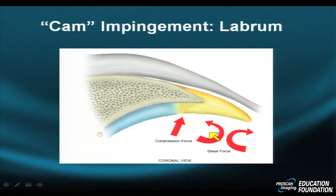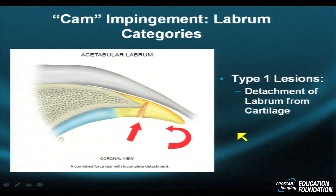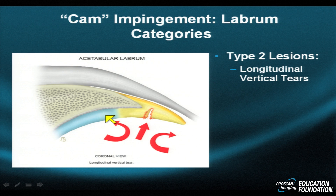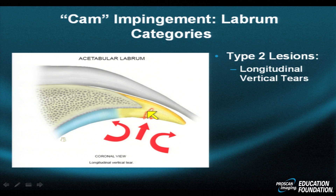Looking at the labrum, there are compressive forces and shear or rotatory forces. We can categorize labral injuries by location. In cam impingement, type 1 lesions involve fibro-hyaline detachment — split or vertical tears at the transition between fibro and hyaline cartilage. In type 2 lesions, the tears are further out, involving the fibrocartilage predominantly in a vertical orientation.